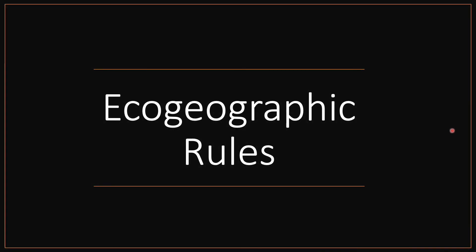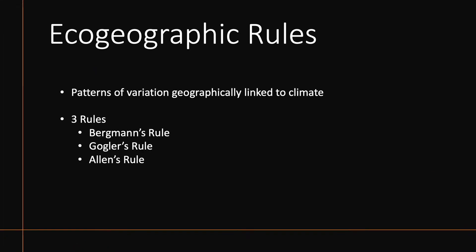Welcome to the Brain Boost channel. Today we're going to be talking about ecogeographic rules. When we talk about ecogeographic rules, we're basically talking about patterns of variation that we see in animal populations based on their geography and how this is linked to the climate of that geography. We're going to notice how animals tend to have different appearances based on whether they live more north or south.